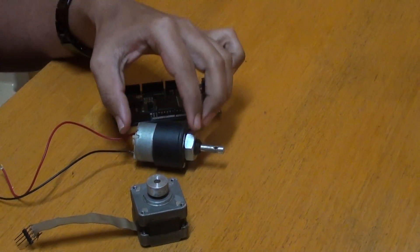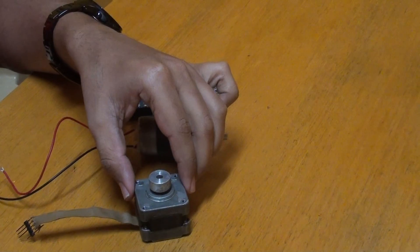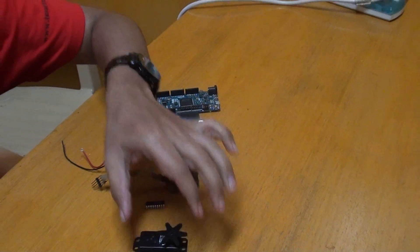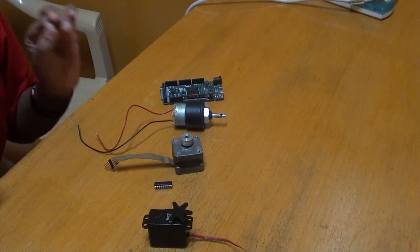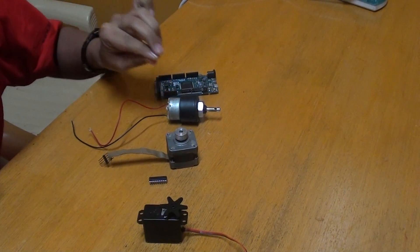Here we have a DC motor as you can see, here we have a stepper motor, and here we have a servo motor. We are going to interface each and every motor individually with the Arduino Doom and check how they work.